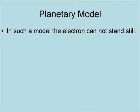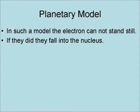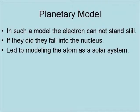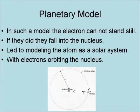The difficulty is that in such a model, the electrons cannot stand still, because if they did, they would fall into the nucleus. This led to modeling the atom as a solar system, with electrons orbiting the nucleus like planets around a star.